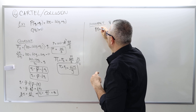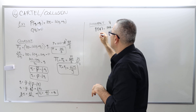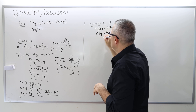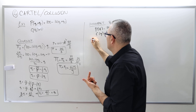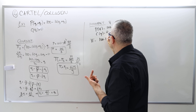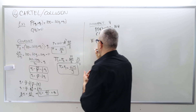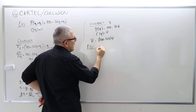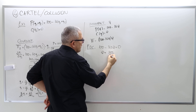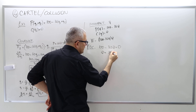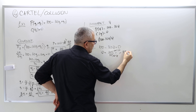The price will be 100 minus 16Q. Because cost is zero, monopoly profit is (100 minus 16Q) times Q, just the revenue. The first order condition gives 100 minus 32Q equals zero, so Q equals 100/32, which simplifies to 25/8. This is the total monopoly output.